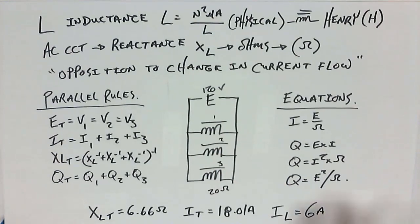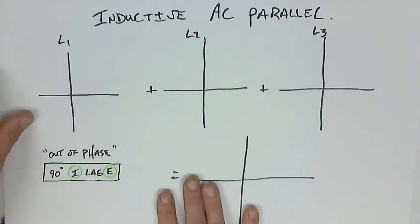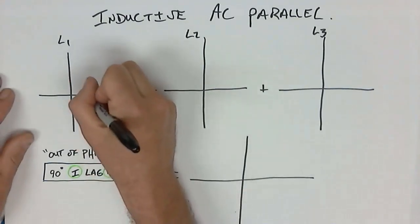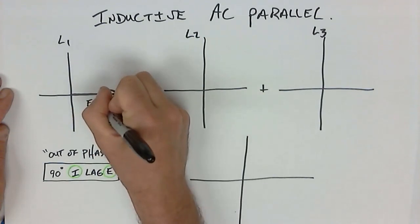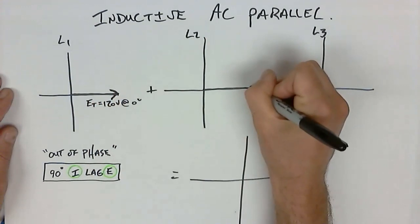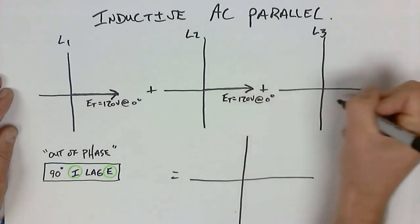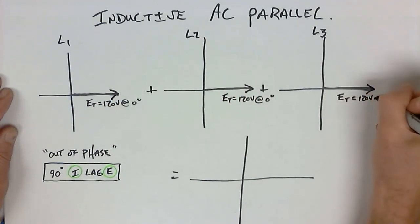How is this going to be represented on a phasor diagram? Here is the phasor diagram for an inductive AC parallel circuit. First things first — what do we have as a reference? The voltage. Voltage is always the reference. So here's the voltage phasor: E total, 120 volts at zero degrees for each branch, and E total equals 120 volts at zero degrees for the source.